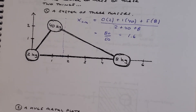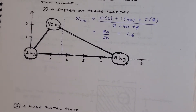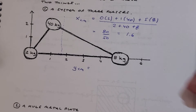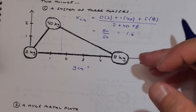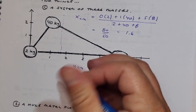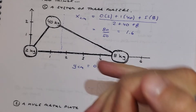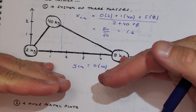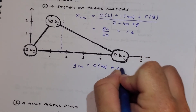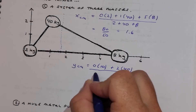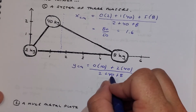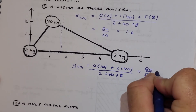Let's do the same thing in the y direction — you might even try pausing the video to see if you can do it. For the y center of mass, you take each position times its mass. You could use three terms, or you could say position 0 in the y direction is worth 10 — because there are 10 kilos at position 0. It doesn't matter that they're spread out horizontally, since we're looking for the vertical center of mass. Then position 2 is worth 40. Divide by the total mass: 2 plus 40 plus 8.